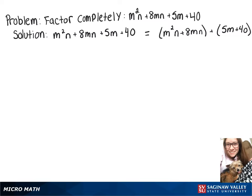So now looking at what we can factor out of each of those groups, in our first group, we can take out mn and then we're left with m plus 8.